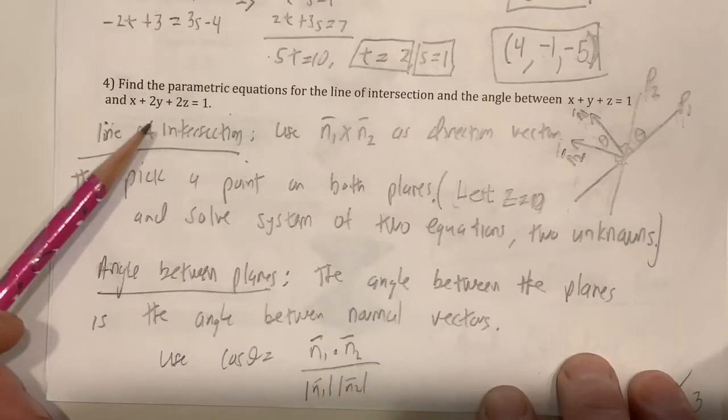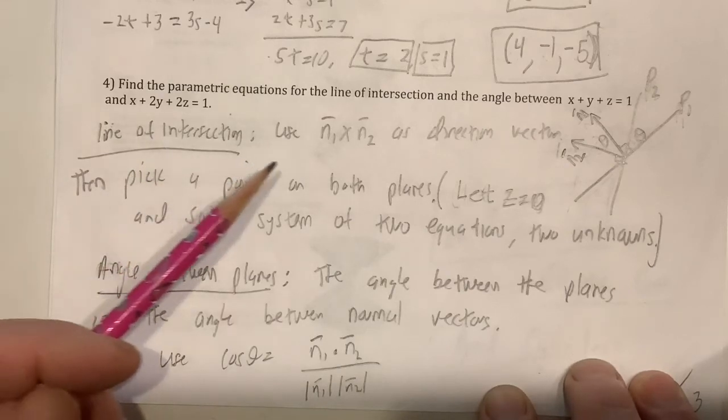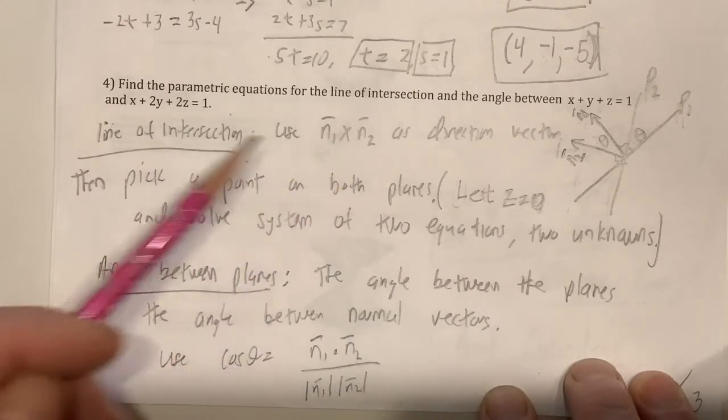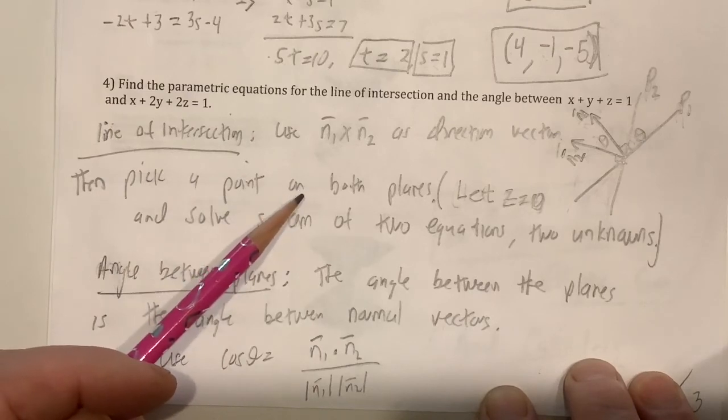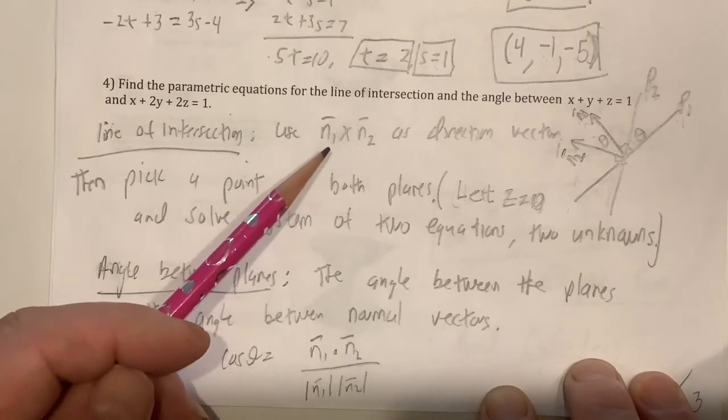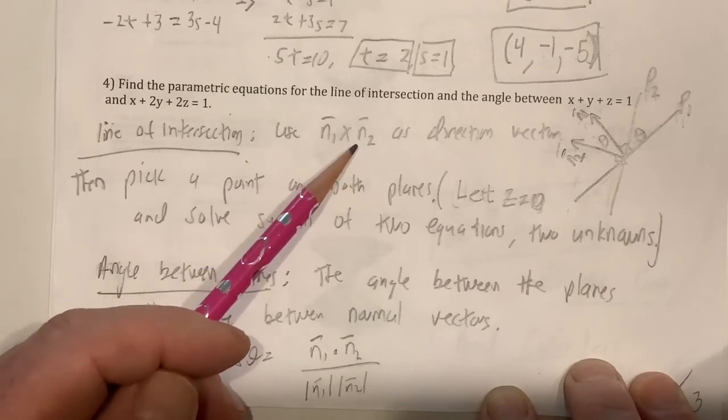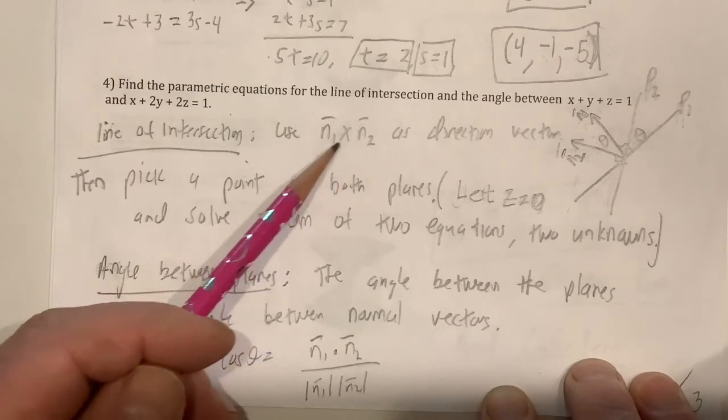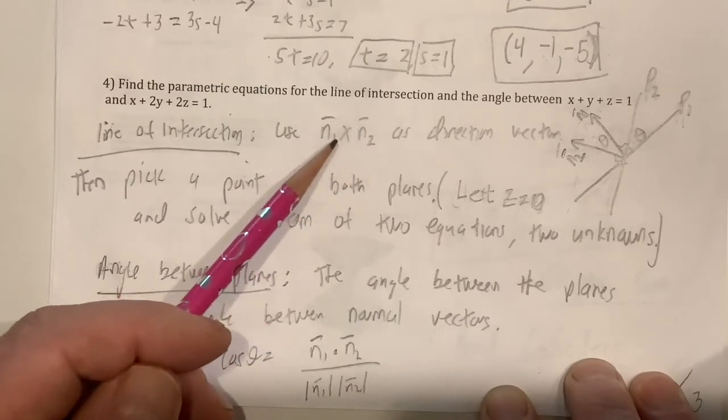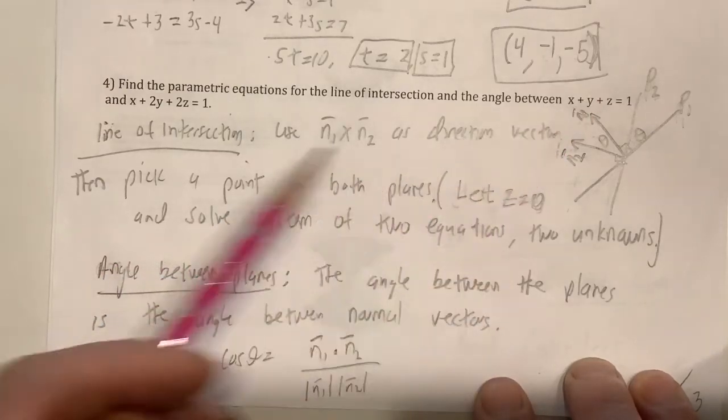How about this? If I give you two planes, can you find a line of intersection and the angle between the two planes? Okay, well, for the line of intersection, since it's a line, you need a vector, a direction vector, and a point. The direction vector, you can use the cross product of the two normal vectors. Since the line lies in both planes, it has to be orthogonal to both of these vectors, right? Anyway, so this would be your direction vector. And to find a point that's on both planes,